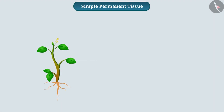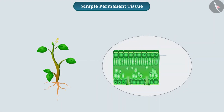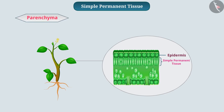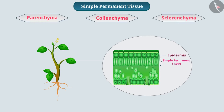The outermost layer of a plant is made up of a single layer of cells. This layer is called epidermis. Below the layer of epidermis, there are some layers of cells called simple permanent tissue. Tissue that is made up of only one type of permanent cells that perform the same function is called simple permanent tissue. According to function, simple permanent tissue is classified into parenchyma, collenchyma, and sclerenchyma.